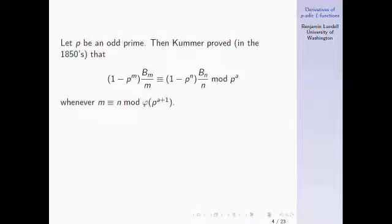Now let p be an odd prime. Around the 1950s, Kummer proved an amazing congruence of Bernoulli numbers: B_m and B_n, with correction factors (1−p^m) and (1−p^n) out front, are congruent modulo a very high power of p, provided that m and n are congruent modulo that same high power of p times another factor of (p−1).